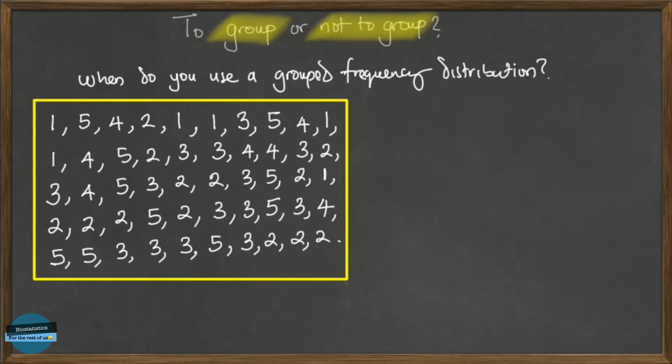Now to summarize this in a frequency table is quite easy. Why is it easy? Because the range of values are not much. If we look at it, the minimum value here is one. Let's look at the maximum value. The maximum value here looks like five.